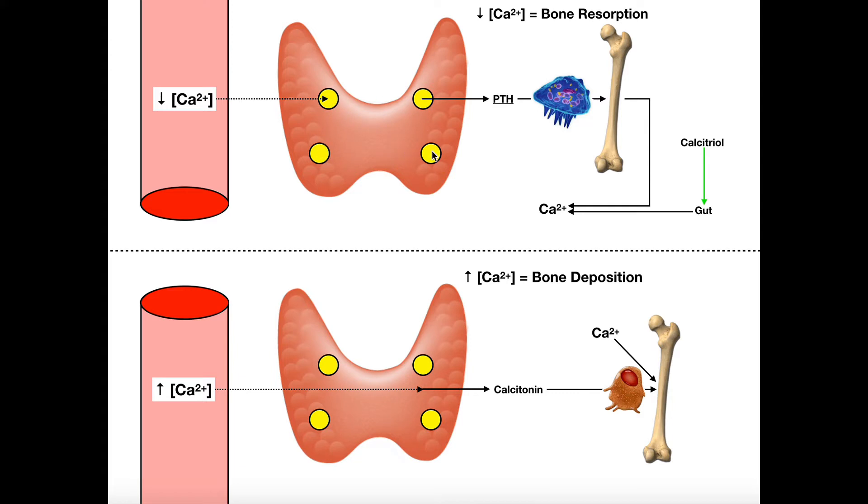These parathyroid glands will release a substance called parathyroid hormone, also called PTH. That's what we'll call it from here on out. Now, PTH is released whenever there's low blood calcium. So these cells are able to sense that, and when there's low blood calcium, they release PTH. Now PTH's function is to increase blood calcium levels.